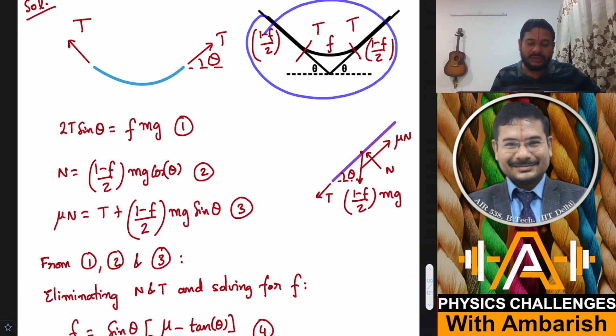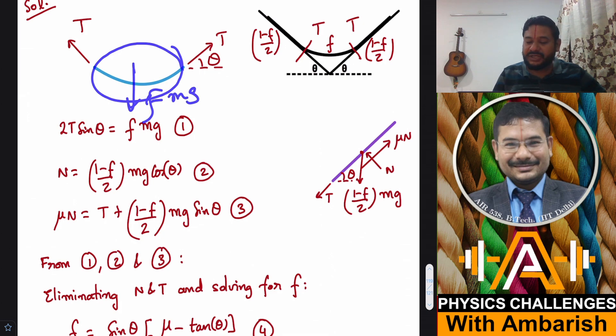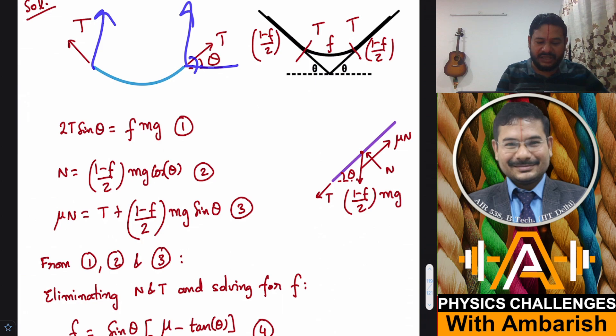This is the f fraction so it has got a mass f mg. Let's say tension over here is T, so tension is T. Tension is acting along the tangents of this curve. So we can say that 2T sin theta, horizontal angle this, so T sin theta and T sin theta are balancing this mg, so 2T sin theta should be equal to f mg. Fair enough, vertical force balance for the part hanging in air.